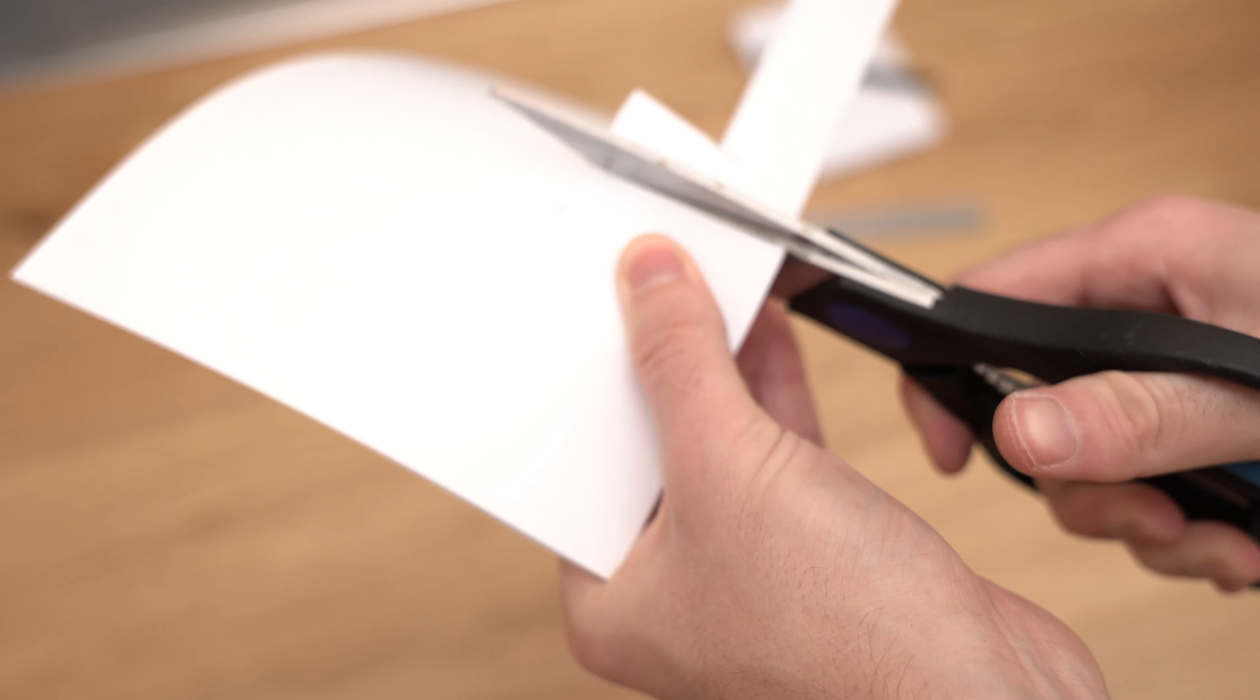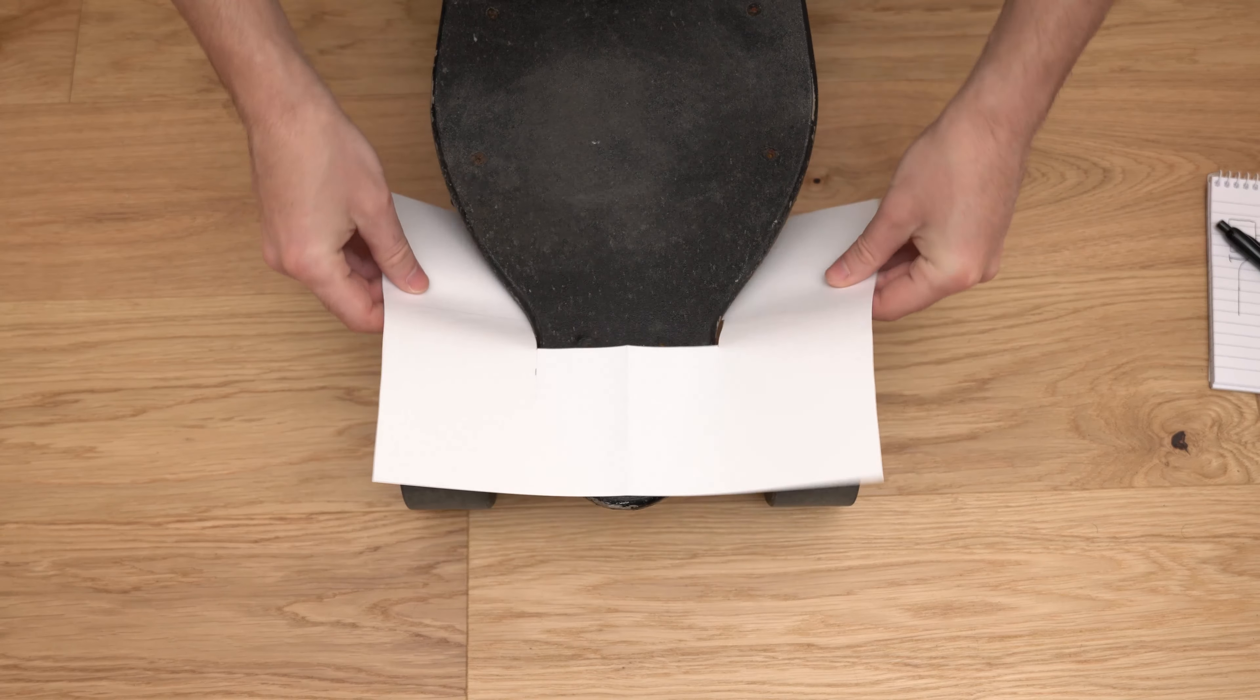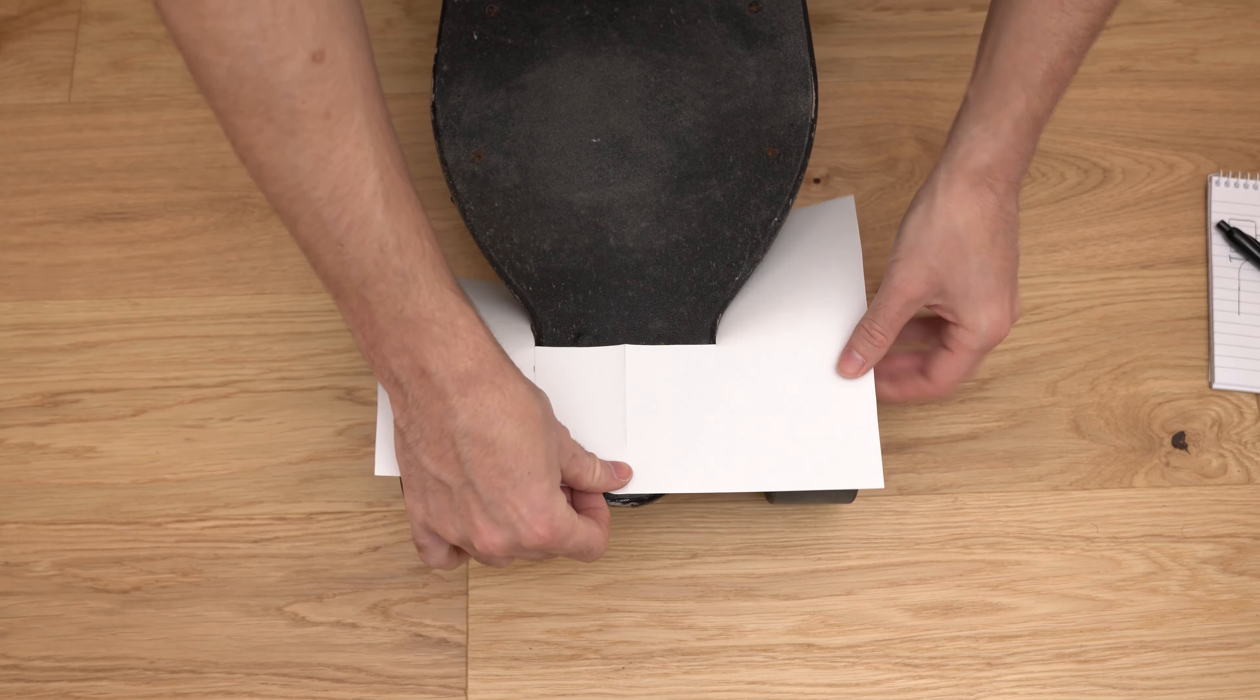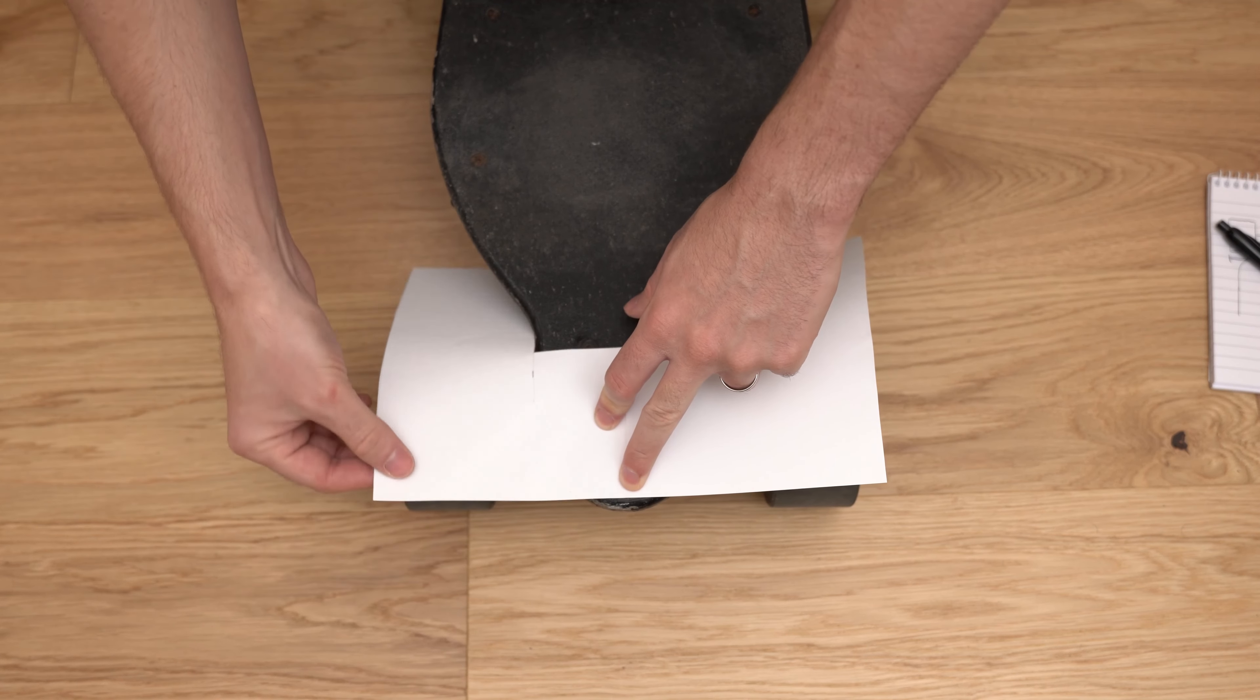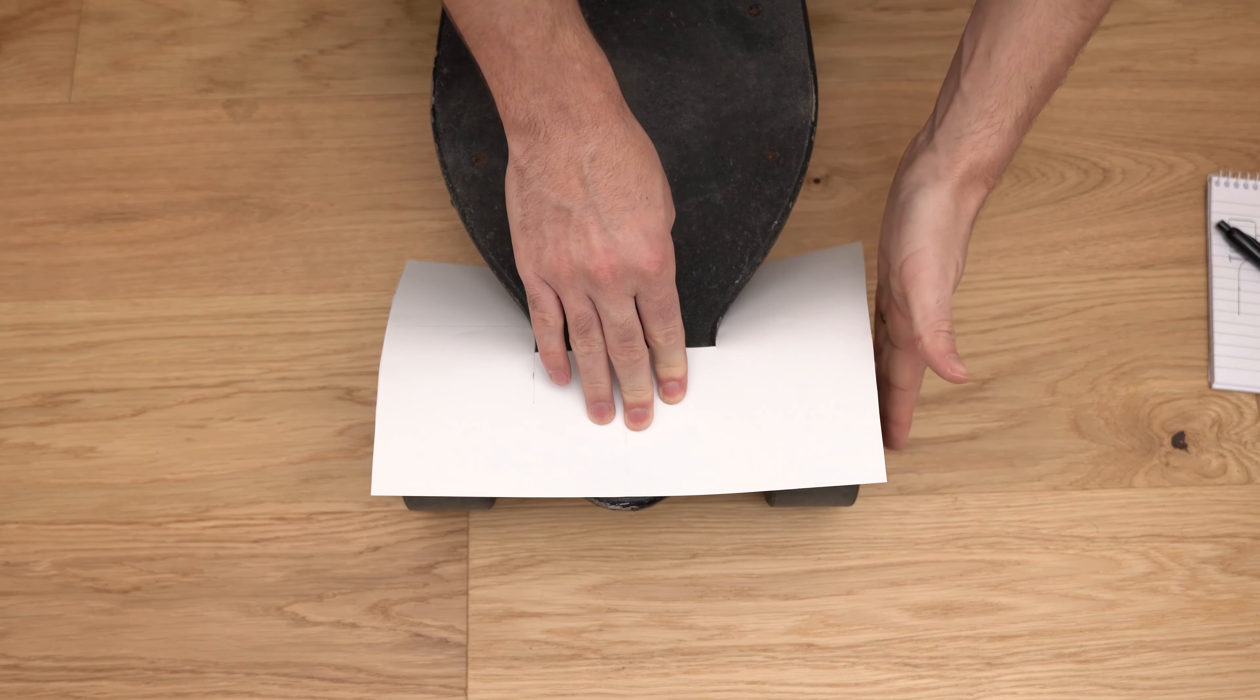Then cut it out and try it on your skateboard. Don't worry if the fit isn't perfect, just repeat this step and do small modifications until the guard fits properly. You want to make sure that the cutout for the deck isn't too wide or narrow.